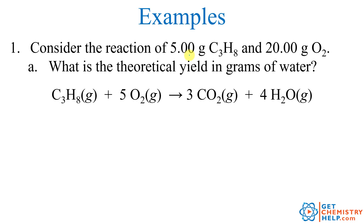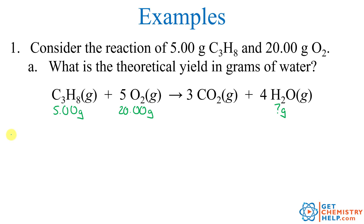Consider the reaction of 5.00 grams of C3H8 — propane, like you might find in a propane tank for grilling — and 20.00 grams of oxygen. What is the theoretical yield in grams of water? Because we have two different reactants trying to figure out a product, this is a limiting reactant problem. Let's go ahead and calculate the theoretical yield — how many grams of water could we make theoretically if everything goes flawlessly?